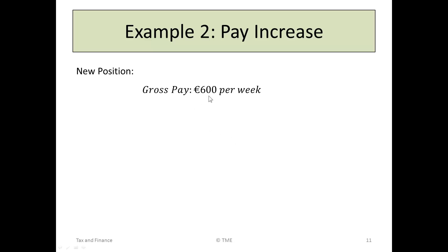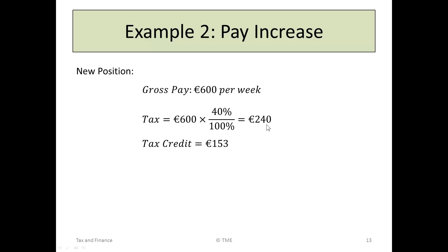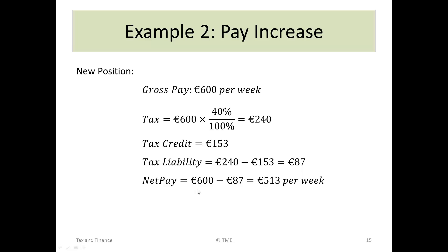The new position is that he's on €600 per week. His tax bill is now 40%, so his gross tax is 40% of €600, which is €240. But he has a higher tax credit of €153. So the real tax liability is €240 minus €153, or €87. The net pay is the gross pay of €600 minus €87, or €513 per week.